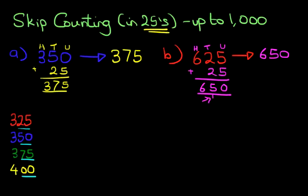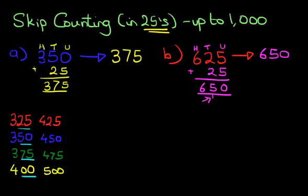Let's just do the 400s. We've got 425 — notice it ends in 25. Then we've got 450, which ends in 50. Then 475, which ends in 75. And lastly, 500, which ends in 0. So it's all very simple and very straightforward. Do not be scared of working with large numbers.